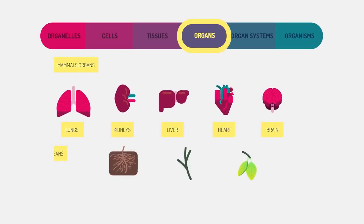In fact, mammals have five vital organs that they cannot live without: lungs, kidneys, liver, heart, and brain. But plants have organs too.